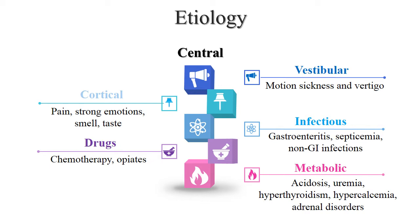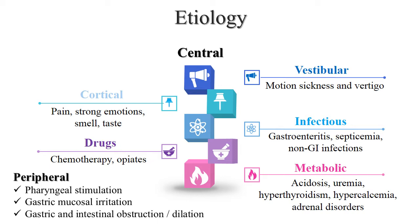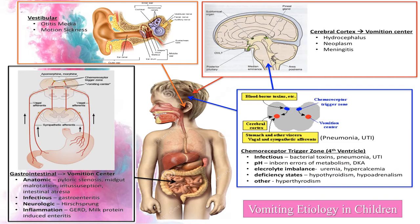Metabolic causes like acidosis, uremia, hyperthyroidism, hypercalcemia and adrenal disorders. Peripheral causes include local pharyngeal stimulation, gastric mucosal irritation, and gastric and intestinal obstruction or dilatation. Other causes include vestibular due to otitis media and motion sickness. In case of hydrocephalus, neoplasm and meningitis, there is involvement of the cerebral cortex or vomiting center.